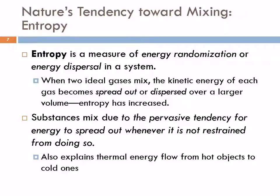Think of leaves falling off a tree — they're very ordered on the tree, but in the fall they blow all over the place and become very disordered. That's an increase in entropy. At the heart of it is a dispersal of energy; energy tends to spread out. Entropy also explains thermal energy flowing from hot objects to cold ones. If you put an ice cube in hot tea, the energy flows from the tea into the ice cube — you never see a cup of tea spontaneously grow an ice cube, because that would concentrate energy rather than disperse it.